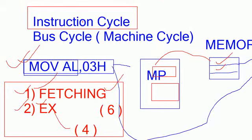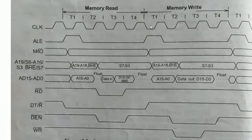The same steps apply for every instruction in your program — fetching and execution. Decoding is considered part of the execution unit. The instruction cycle is the time taken by the microprocessor to fetch the opcode from memory, decode it, and execute it — that entire time is called the instruction cycle.